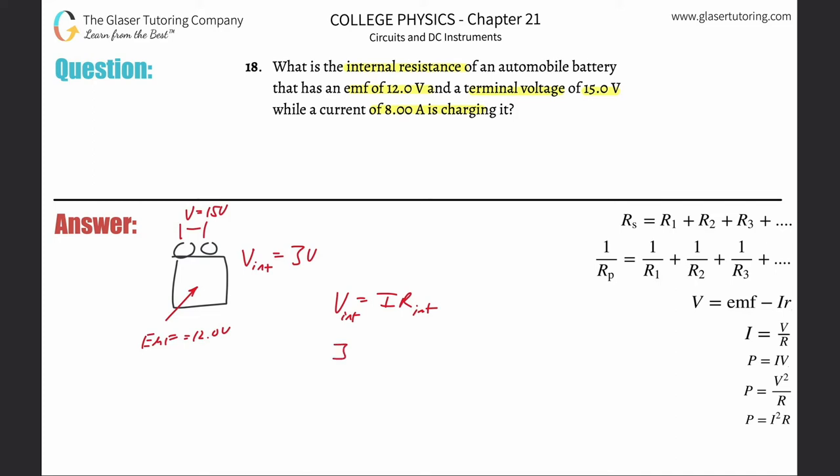So this is 3, current's 8, R-INT. So the internal resistance is going to simply be 3 over 8, and it works out to be 0.375, or three eighths. And that is ohms.